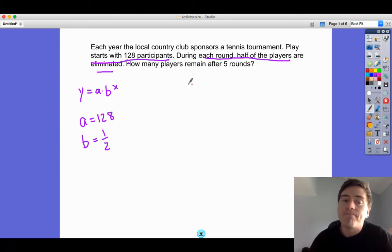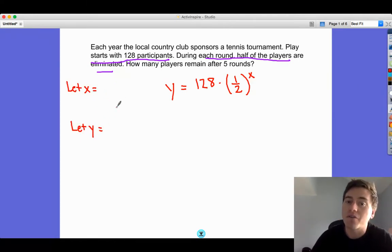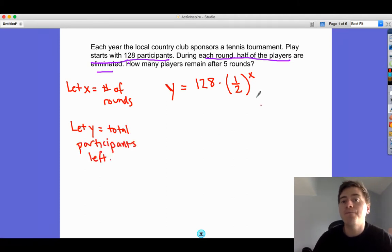I can write an equation then: y equals 128 times one half, and this needs to happen some amount of times. The exponent is going to say multiply by one half some amount of times. Let's clarify what our variables are. y is the number of participants, and x is the number of rounds.